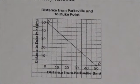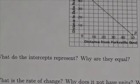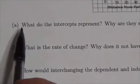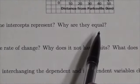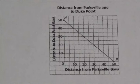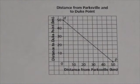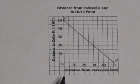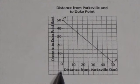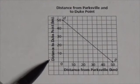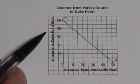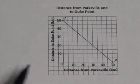Now the first question we're going to ask is what do the intercepts represent and why are they equal? Let's take a quick look at the graph first. Notice that in the way they've set up this graph, my independent variable is the distance from Parksville and my dependent variable is the distance to Duke Point Ferry, or the Duke Point Terminal.